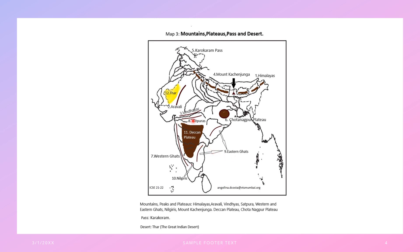River Narmada plays a very important part because above it is the Vindhya Range and below it is the Satpura Range. Between the Vindhya and Satpura flows the Narmada River. Please make sure the Vindhya Mountain does not touch Chambal, does not touch Betwa, nor does it touch Narmada. And the Satpura should not touch Tapi or Narmada when you are drawing this mountain. Please keep very sharp color pencils so that when you are marking, you don't touch any of these rivers.